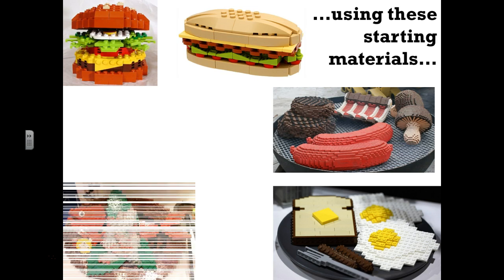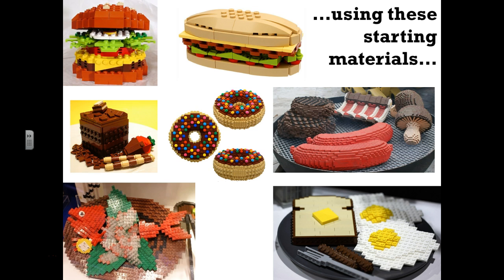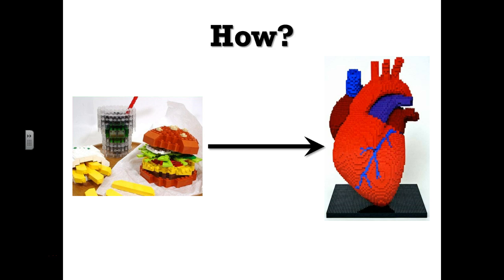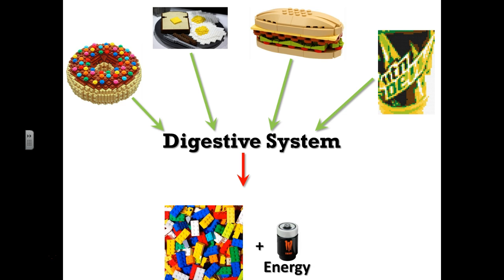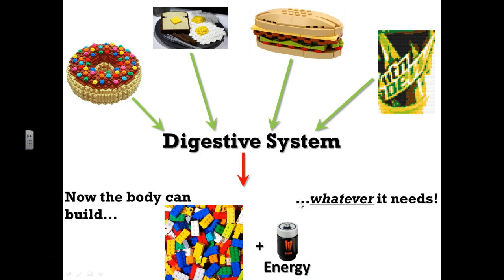All these delicious, inedible pieces of plastic starting materials. So, how do you get from these starting materials to actually build all those organs? How do you get from that to that? Well, to go from all this stuff here is your digestive system's job. It's the one that's going to take all these pieces, take them apart, break them down, so you get those loose Legos which you can use to assemble anything, and of course the energy to assemble those things. Now, the body can build whatever it needs — you've taken these things and broken them down into their individual pieces so you can reassemble them into whatever you need. That's your digestive system.